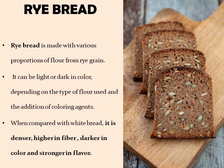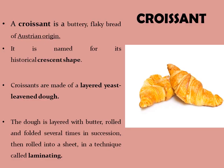On number four, we have rye bread. Rye bread is made with various proportions of flour from rye grain. It can be light or dark in color depending on the type of flour used and the addition of coloring agents. When compared with white bread, it is denser, higher in fiber, darker in color, and stronger in flavor.